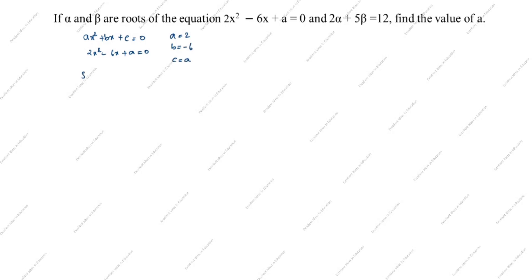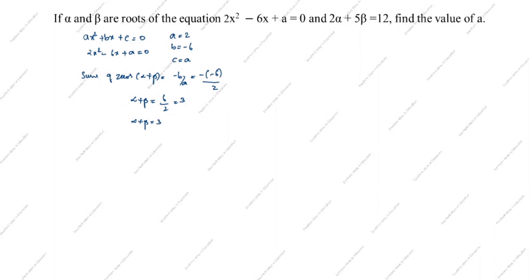What is the sum of zeros? Sum of zeros: alpha plus beta equals minus b by a. Here b is minus 6, so minus of minus 6 over a which is 2. Therefore alpha plus beta equals 6 by 2, which equals 3. So alpha plus beta = 3. This is the first equation.